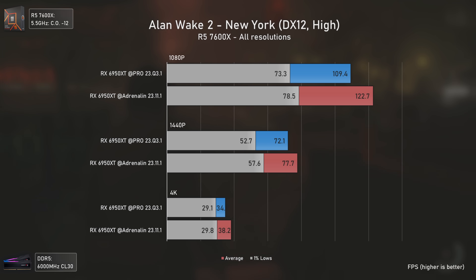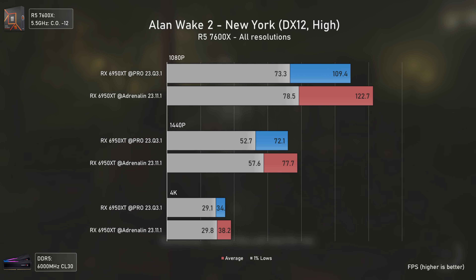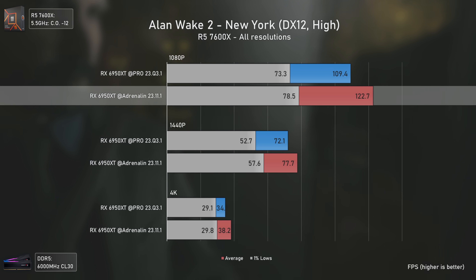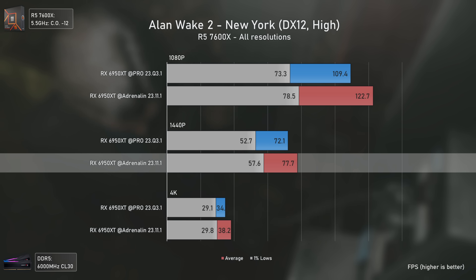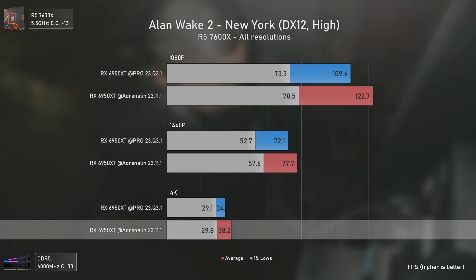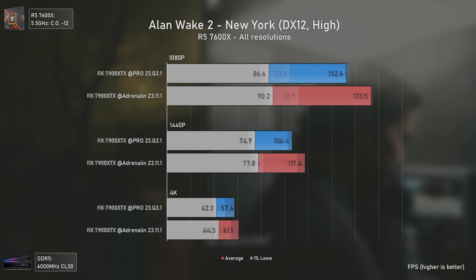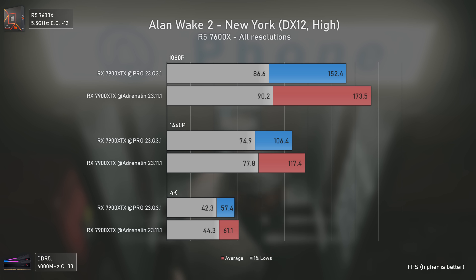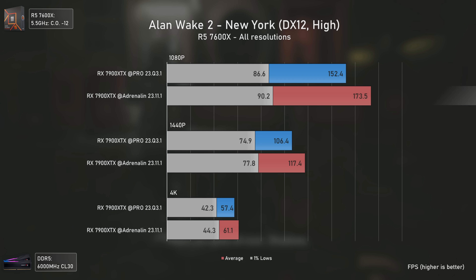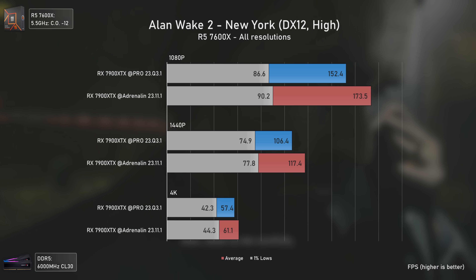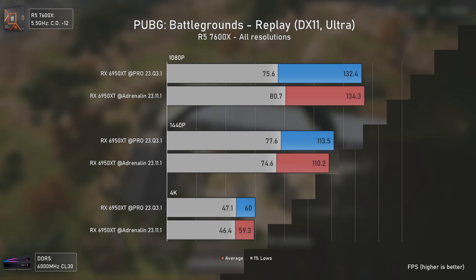Moving to Alan Wake 2, you can immediately see that the Pro drivers do not feature the optimizations for this game that the Adrenaline ones have. The RX 6950 XT with Adrenaline drivers is 12% faster at 1080p, 8% faster at 1440p, and 12% faster at 4K. That difference is more or less maintained with the RX 7900 XTX — 14% faster at 1080p, 10% faster at 1440p, and 6% faster at 4K with the Adrenaline drivers. Definitely something to consider.